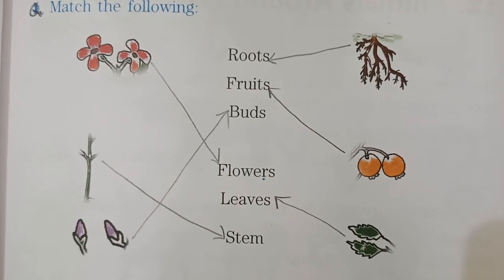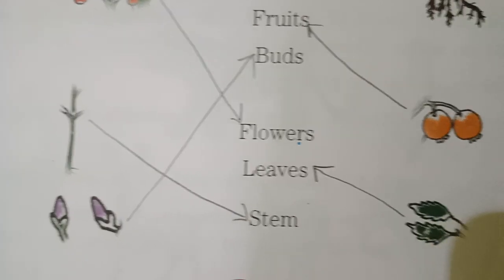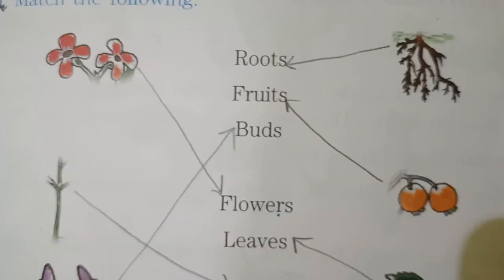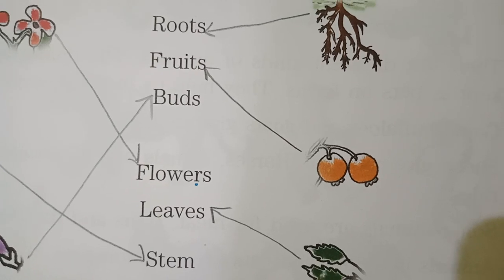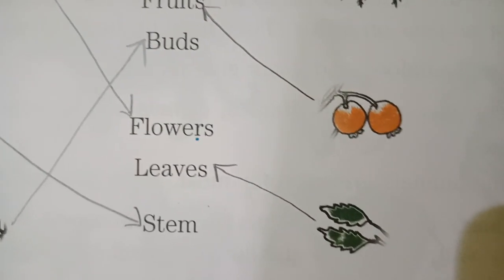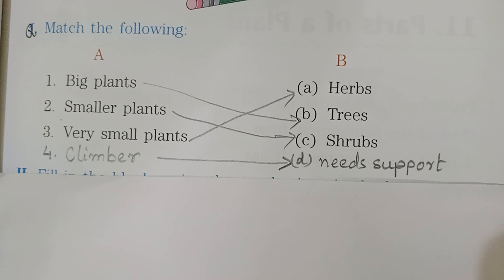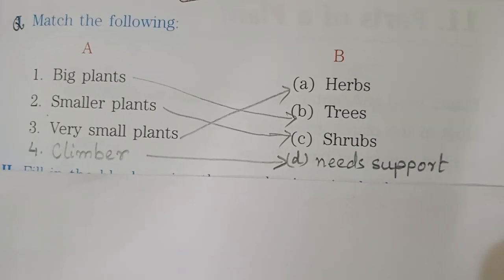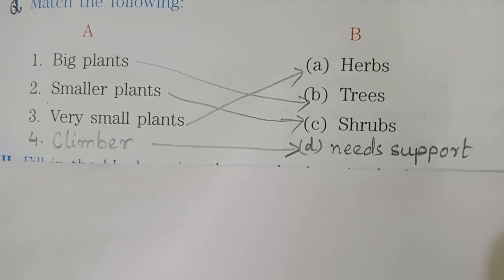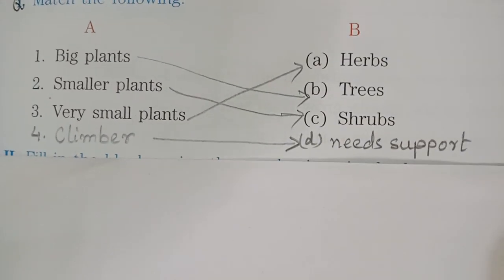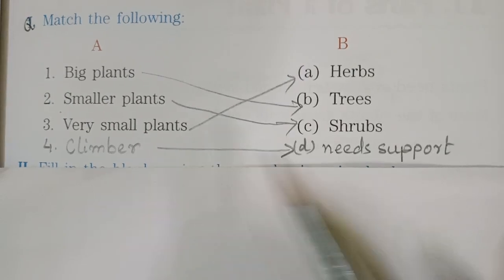Match the following. So flower matches with flowers. This one is stem — it will match like this. These are birds. Then roots. Then this is fruit — they will match with fruits. These are leaves. Another matching — big plants will match with trees, smaller plants will match with shrubs, very small plants will match with herbs. And a climber needs support.